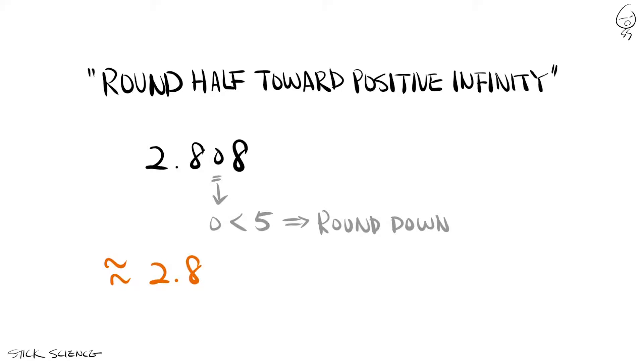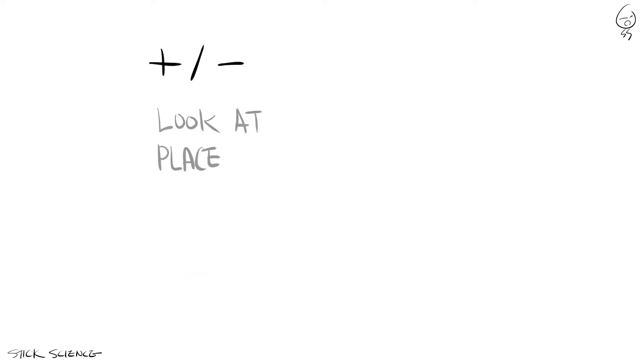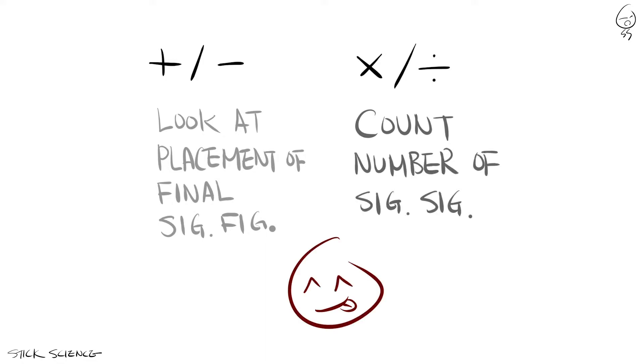And that's how you multiply or divide with significant figures. As for why the rules for identifying the weaker link in multiplication and division is different from addition and subtraction, stay tuned and find out.